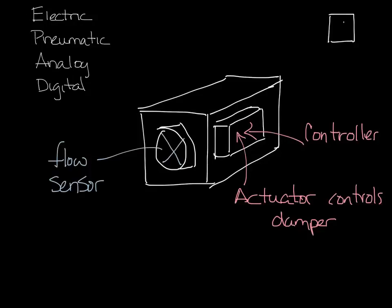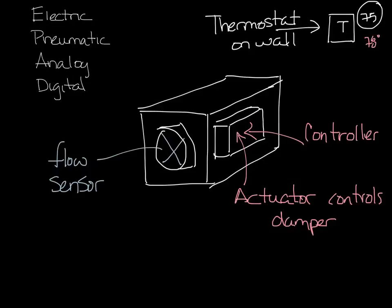Somewhere in the room there'll be a thermostat. The thermostat sets the set point and measures the room temperature. So say you have a set point of 75 degrees and your space is 78 degrees, it sends that information to the controller. The controller then says, hey we need more air and it'll send it to the actuator to open the damper.